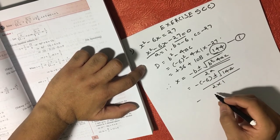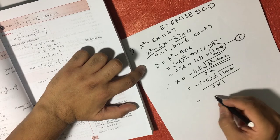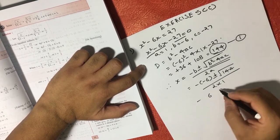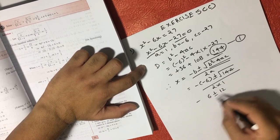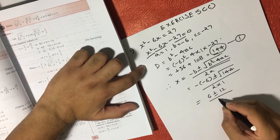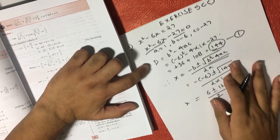Minus times minus becomes 6, square root of 144 is 12, and 2 into 1 is 2, that is the value of x.